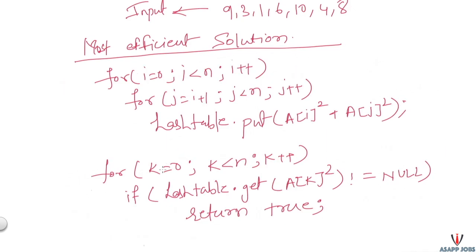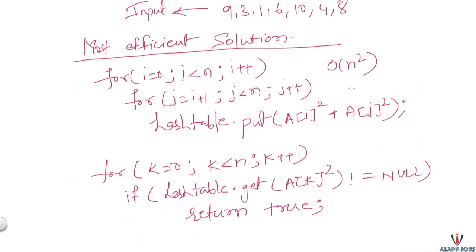In the read-only case, we use two nested for loops and a hash table. We insert the value a[i]² + a[j]² into the hash table for all pairs i, j. Building this hash table takes O(n²) time, and since there are n² values to store, it requires O(n²) extra space.